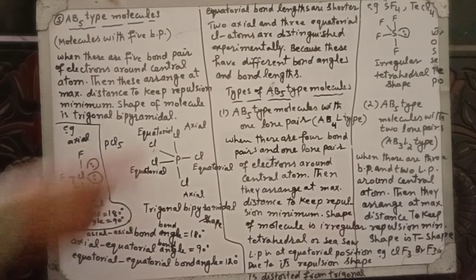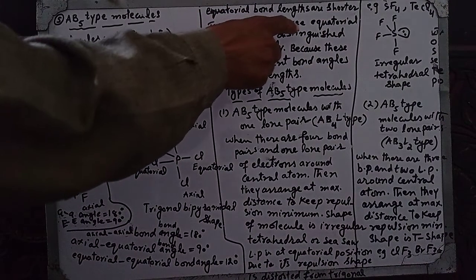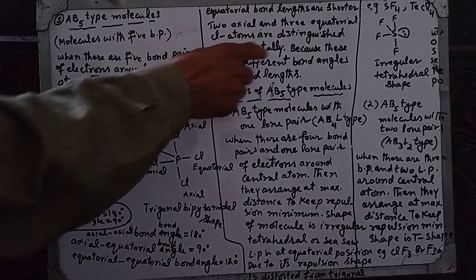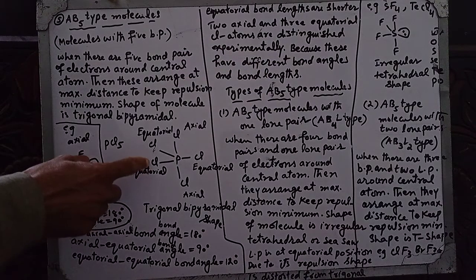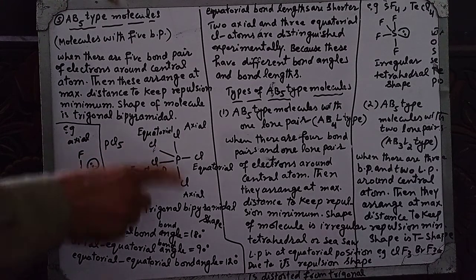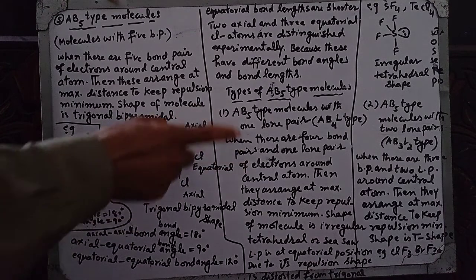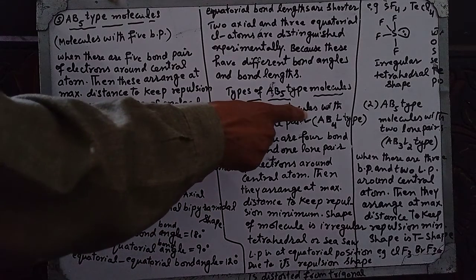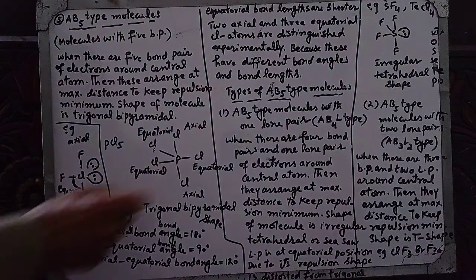The equatorial bond lengths are shorter than the axial bond lengths. The equatorial Cl atoms are distinguished experimentally because they have different bond angles and different bond lengths. We can identify them experimentally by X-rays and spectroscopy.